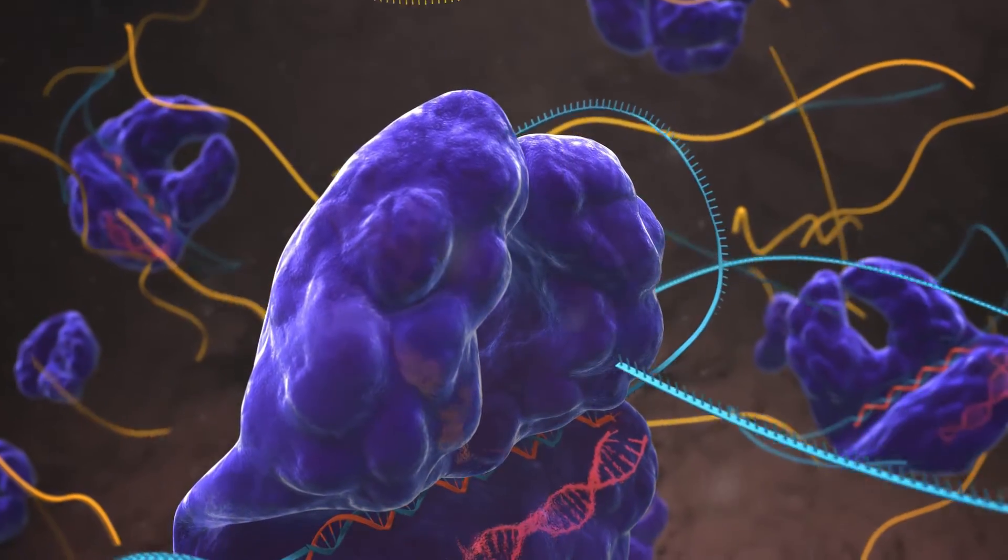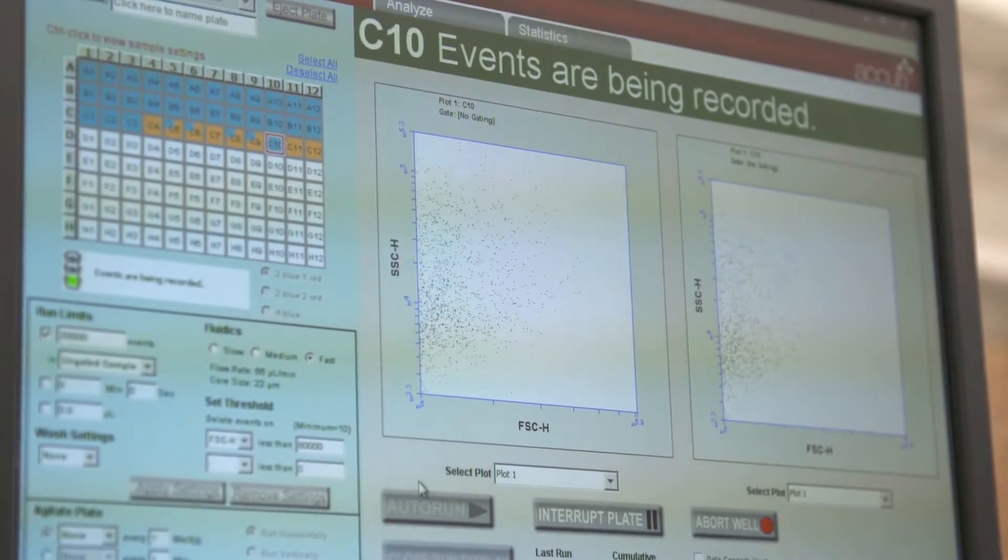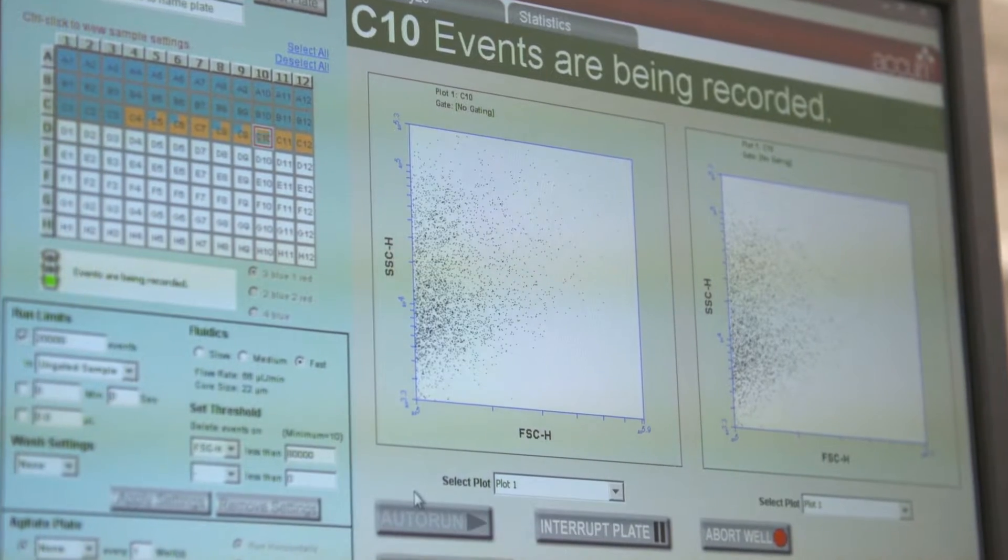It is this mechanism that scientists at the McGovern Institute, Broad Institute, and Harvard University harnessed to create SHERLOCK, a highly sensitive tool to detect infectious diseases in humans.